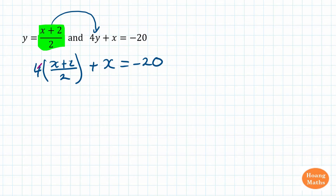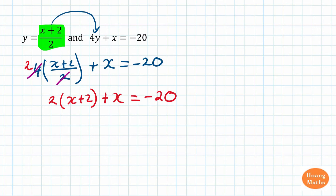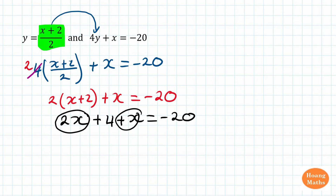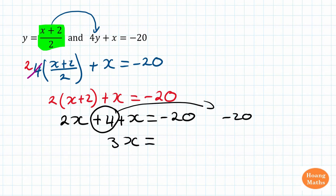Now this one we can simplify. Dividing 4 by 2 gives me 2. So that is 2 times (x plus 2) plus x, which is equal to negative 20. Then I remove the bracket: 2 times x is 2x, and 2 times 2 is 4. So we have 2x plus 4 plus x equals negative 20. Collecting like terms: 2x plus x is 3x. Moving the 4 over becomes minus 4, so negative 20 minus 4 gives me negative 24.